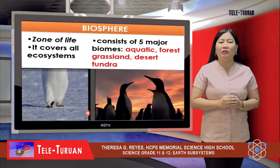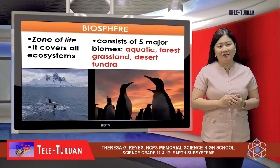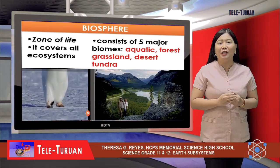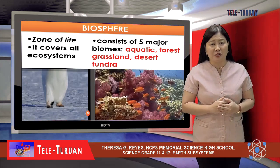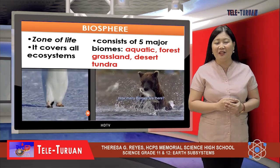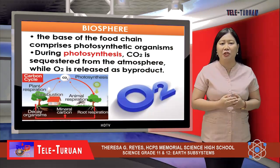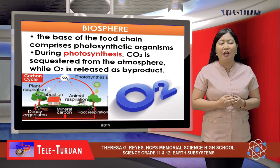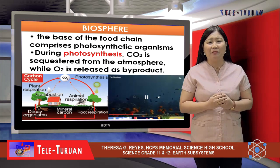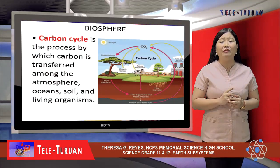Finally, the biosphere is called the zone of life because it covers all ecosystems — from the soil to the rainforests, from microbes to coral reefs, and from the plankton-rich ocean surface to the deep sea. The biosphere consists of five major biomes or communities: aquatic, forests, grassland, desert, and tundra. For the majority of life on Earth, the base of the food chain comprises photosynthetic organisms. During photosynthesis, carbon dioxide is sequestered from the atmosphere while oxygen is released as a by-product. The biosphere is a carbon dioxide sink, and therefore an important part of the carbon cycle.